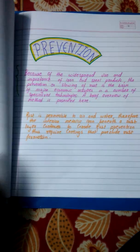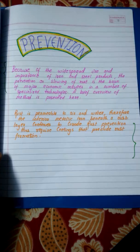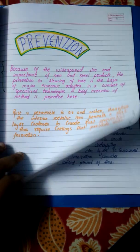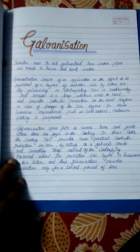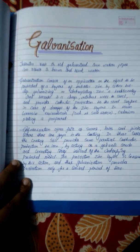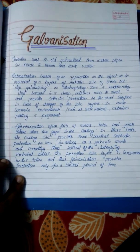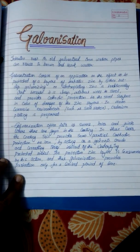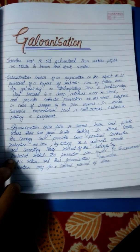Then comes the prevention — how you can prevent the rusting of iron by various methods. Then comes galvanization — whatever you know about galvanization, or what you have been taught in class, you can take the help of reference books or course books.